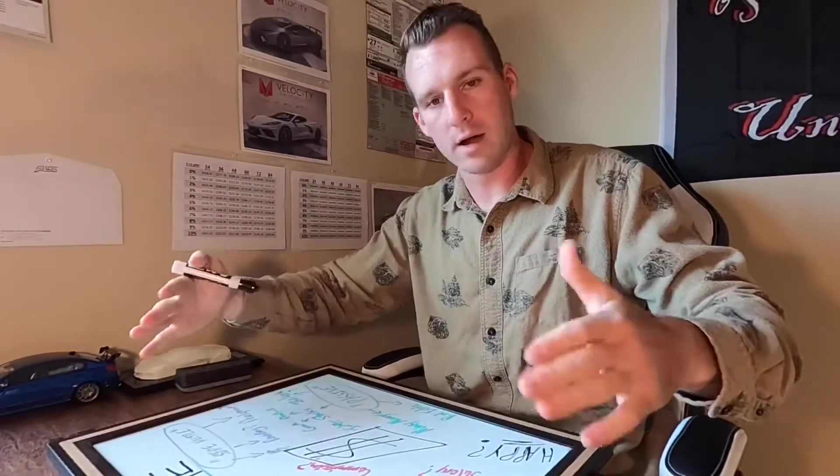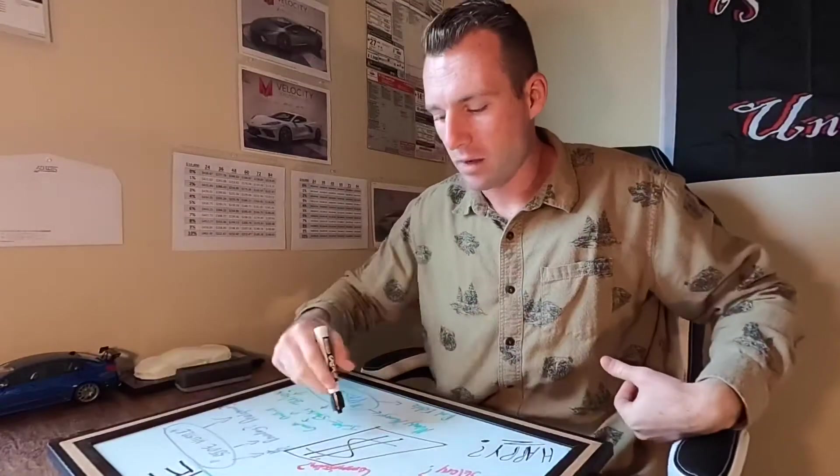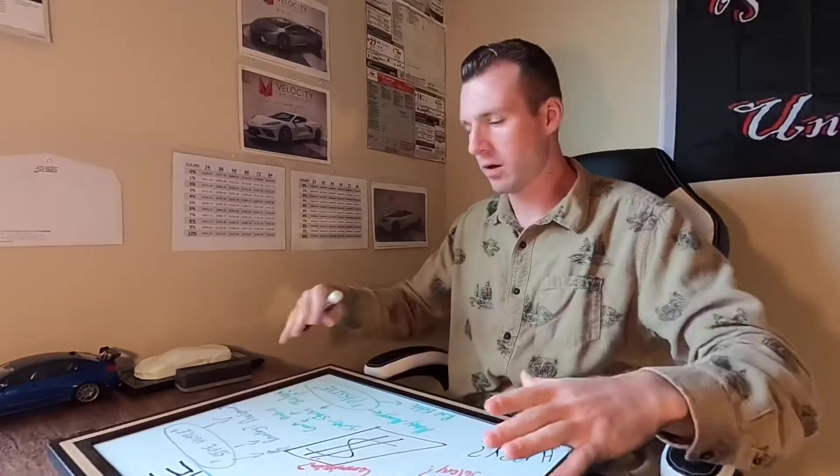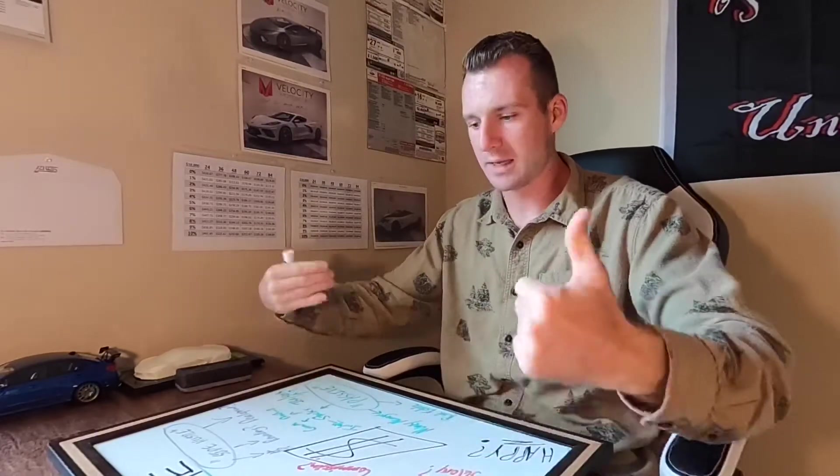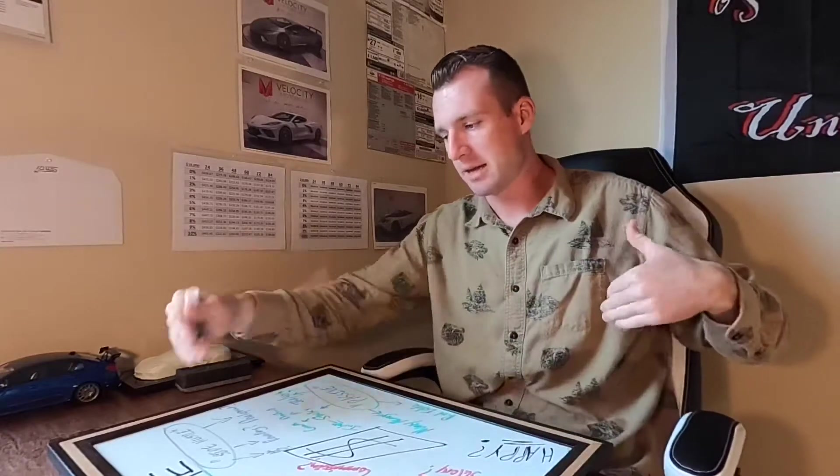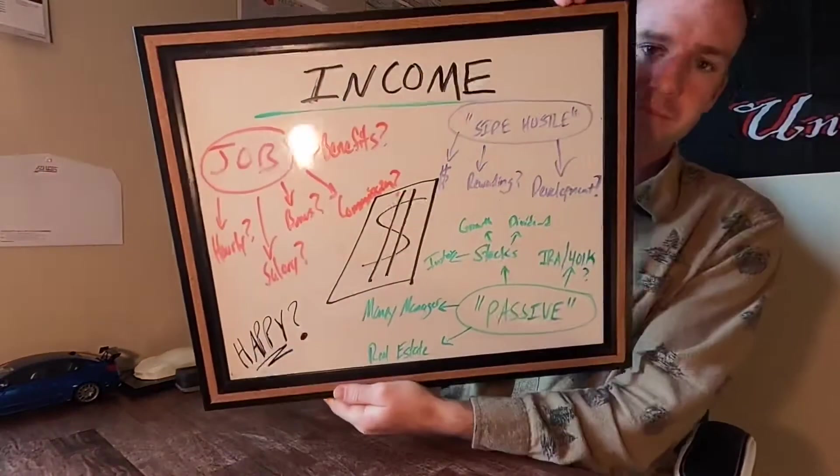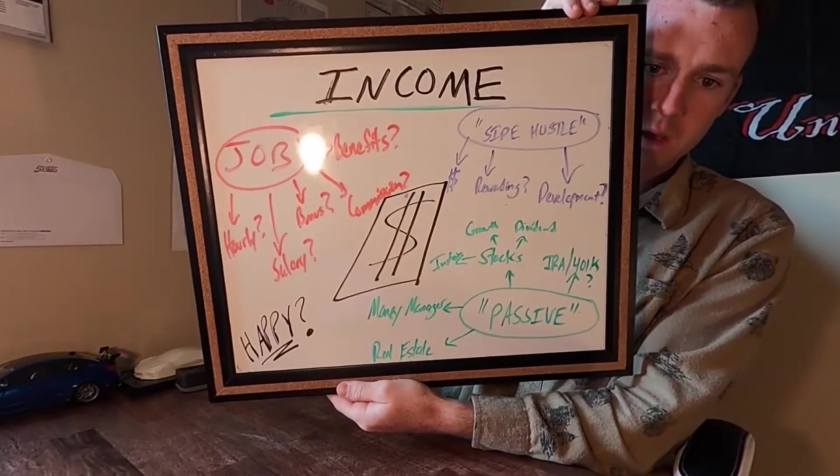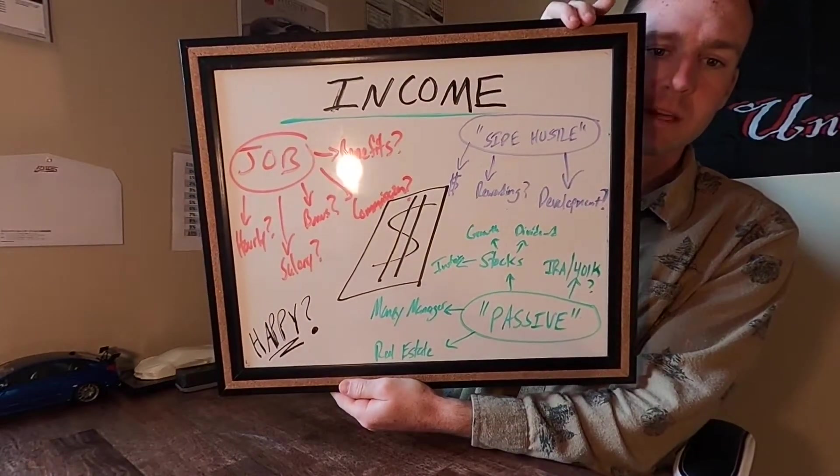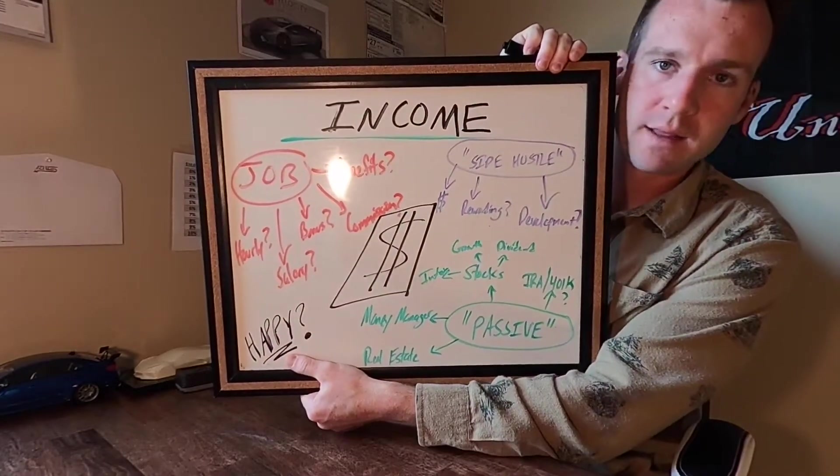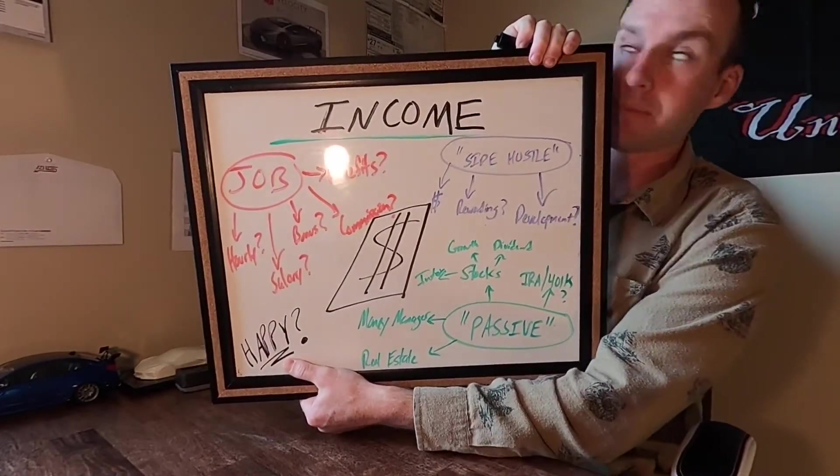I got my whiteboard here, I got a bunch of stuff written down on it, we got colors. So I'm going to orient ourselves to this. We got income, we got money in the middle, and then we got three things that bring in money. You got your job, you got your side hustle, and you got your passive income. And then you got happiness down here in the corner, because why are we doing any of this if we're not chasing after happiness?